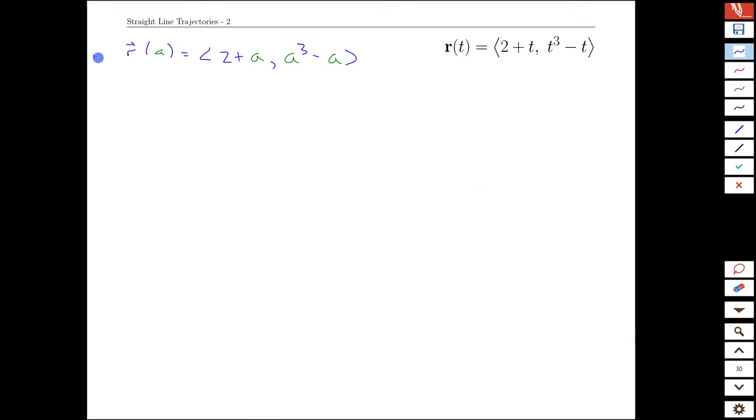So we've copied over the position, and we are going to add the velocity. Let's call it v(a). And if you're looking at the formula here and differentiating, or simply working with this and differentiating with respect to a, the velocity is going to be (1, 3a²-1). And so the straight line L(t) is going to equal the initial position, which is (2+a, a³-a), plus velocity times time. And our velocity is simply (1, 3a²-1), and time is t.